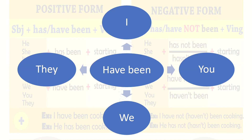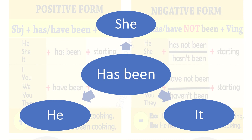When do we use 'have been' and when do we use 'has been'? For I, you, they, and we, we use 'have been'. And for she, he, and it, we use 'has been'.